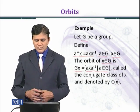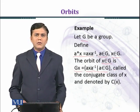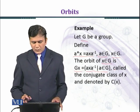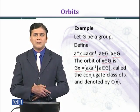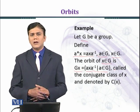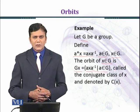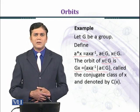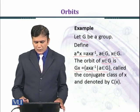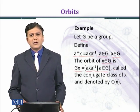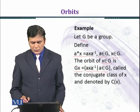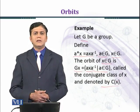So all elements of the form a·x·a⁻¹ for which a belongs to G will come inside the orbit. An orbit represents an equivalence class, and here we have conjugation. That class is called the conjugation class of x, denoted by C(x).